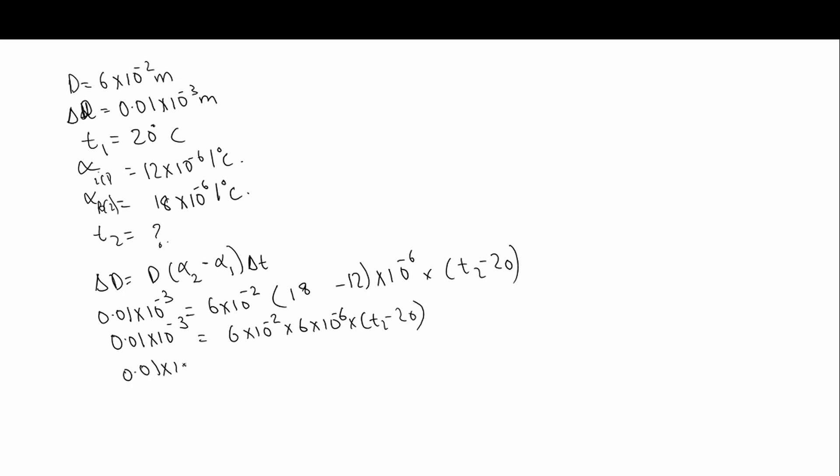So you will get 0.01 into 10 to the power of minus 3 into 10 to the power of plus 8. Because 10 to the power of minus 2 into 10 to the power of minus 6 is 10 to the power of minus 8. If you send 10 to the power of minus 8 this side, it becomes 10 to the power of plus 8. These both terms have gone this side. So 6 into 6 is 36 and remaining is T2 minus 20.